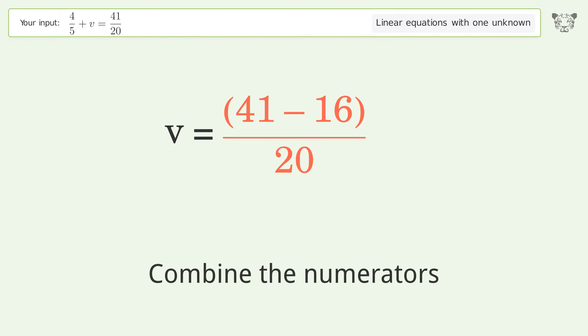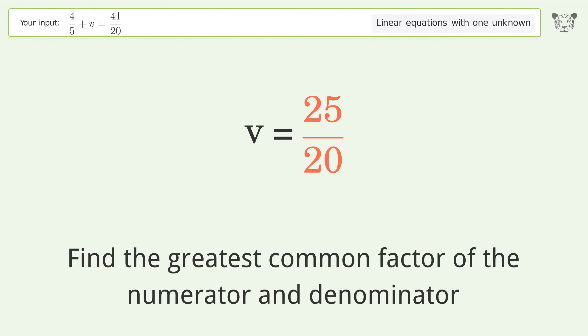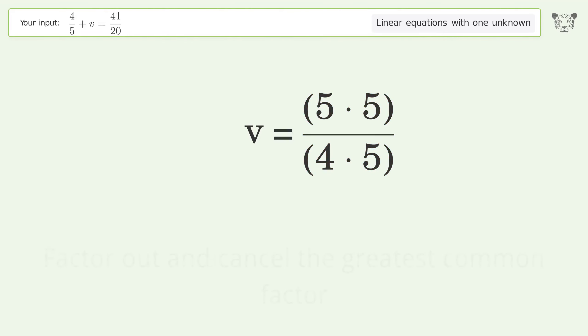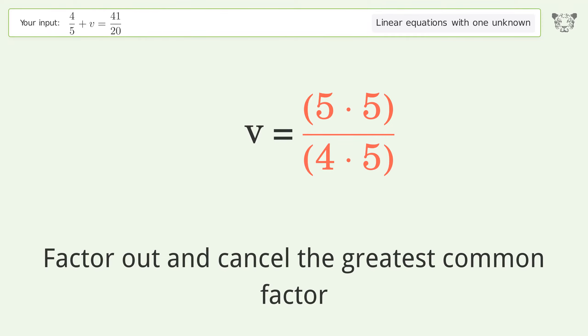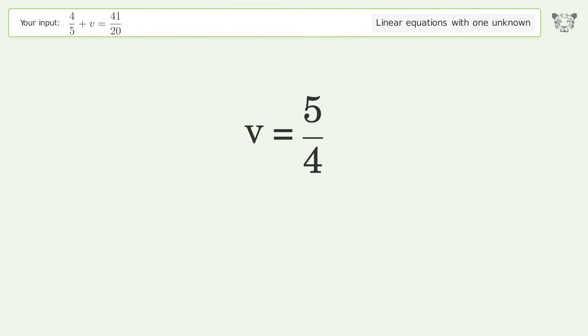Combine the numerators. Find the greatest common factor of the numerator and denominator. Factor out and cancel the greatest common factor. And so the final result is v equals 5 over 4.